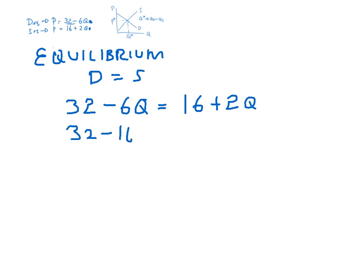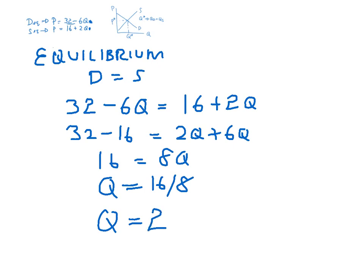32 minus 16 equals 2Q plus 6Q. 16 equals 8Q. Q is equal 16 over 8. Q is 2. Equilibrium quantity is 2 units.